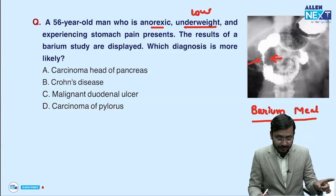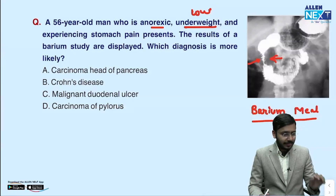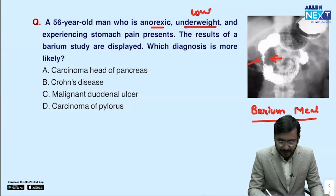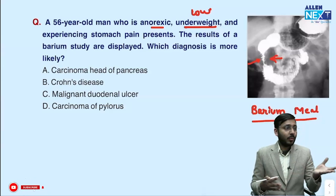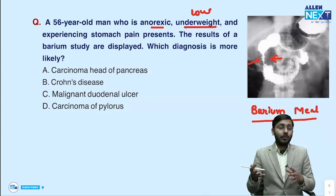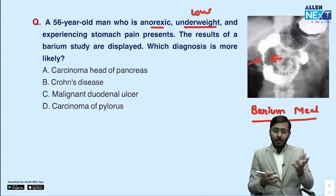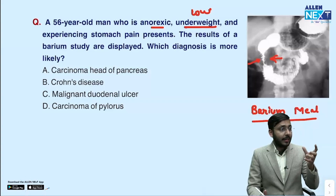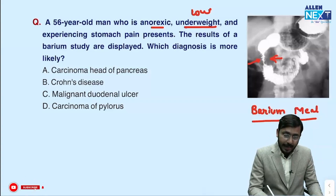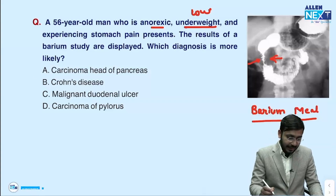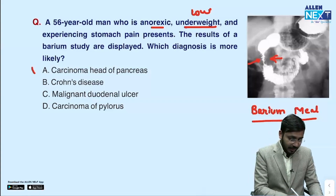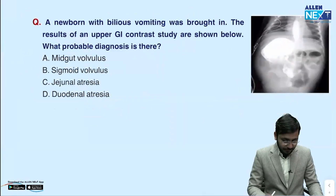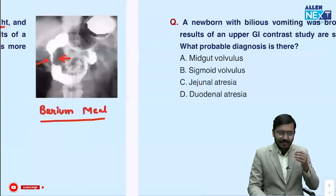It is not Crohn's disease. Why not? Because a barium meal was given — if it was Crohn's disease, a barium meal follow-through would have been given to see the entire small bowel and ileocecal junction. The patient has widening of the C-loop of duodenum and narrowing of the second part of the duodenum, so we are dealing with carcinoma of the head of the pancreas. The answer is CA head of pancreas.